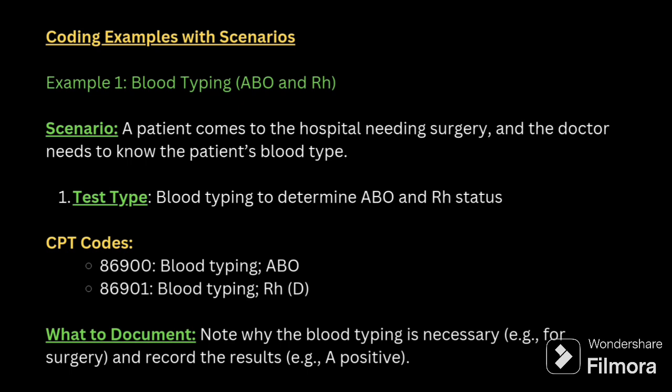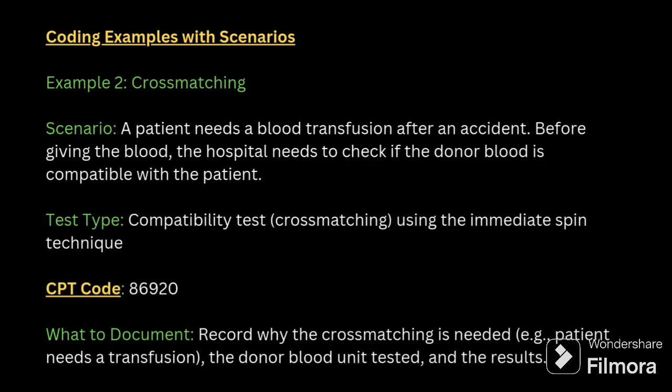Example for blood typing ABO and RH: a patient comes to the hospital needing surgery and the doctor needs to know the patient's blood type, so the CPT codes will be 86900 and 86901. For cross matching, a patient needs a blood transfusion after an accident; before giving the blood, the hospital checks if the donor blood is compatible with the patient, so the compatibility test code 86920 is used.